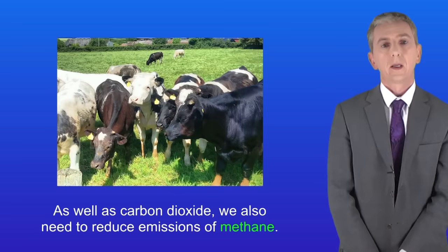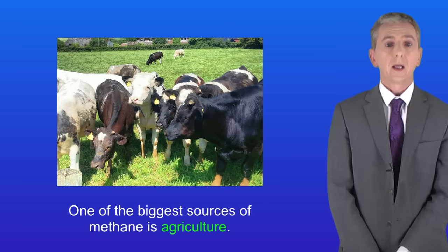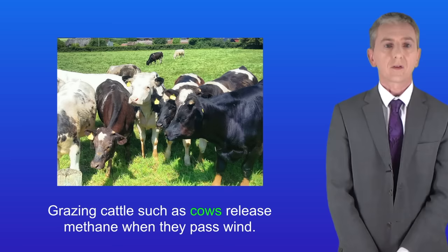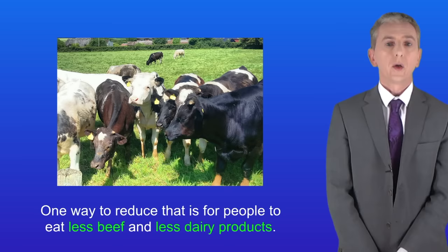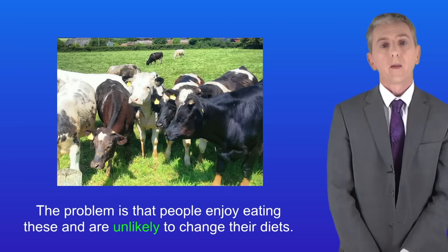As well as carbon dioxide we also need to reduce emissions of methane, and one of the biggest sources of methane is agriculture. As we saw in a previous video, grazing cattle such as cows release methane when they pass wind. One way to reduce that is for people to eat less beef and less dairy products. The problem is that people enjoy eating these and are unlikely to change their diets.